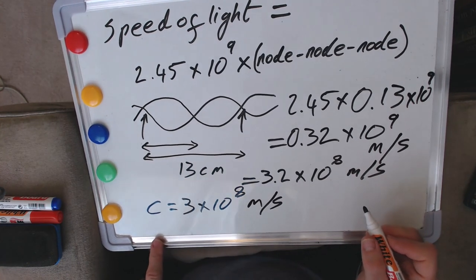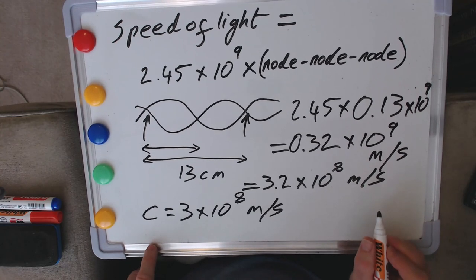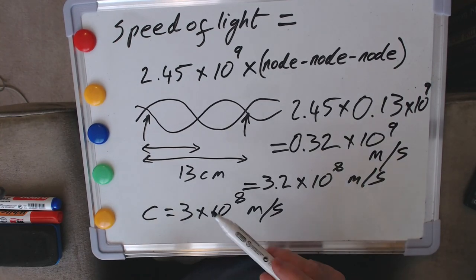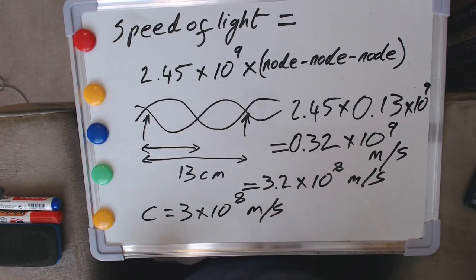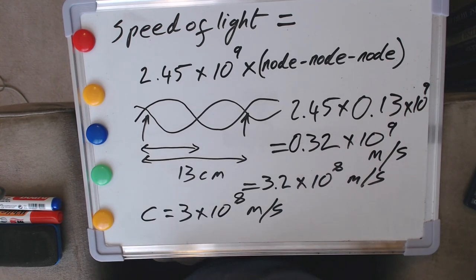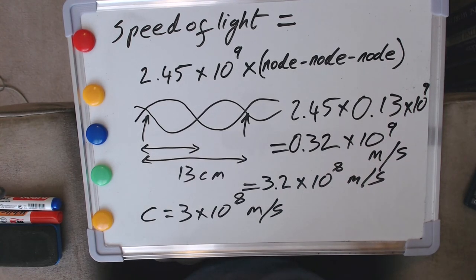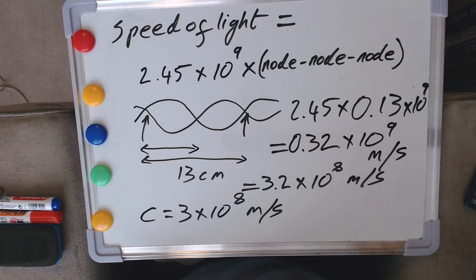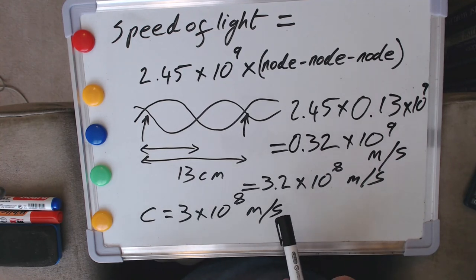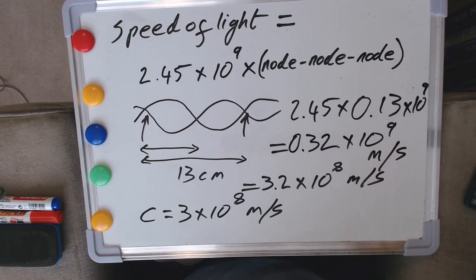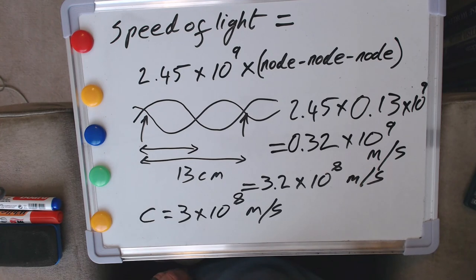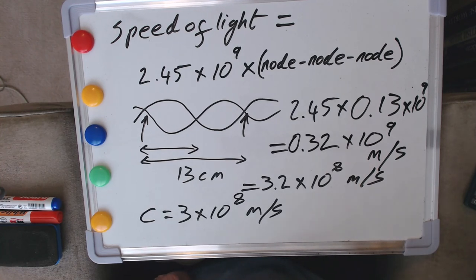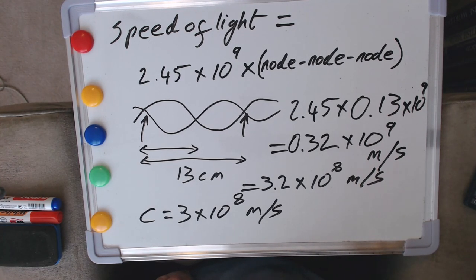So in our very crude experiment, and it is very crude, it's unfortunate that node to node distance is about the same as the diameter of the chocolate biscuits we were using, but in our crude experiment we've got a result for the speed of light that is within 10% of the textbook value, so that's okay I think. We deserve now a cup of tea or coffee and one of our warmed up chocolate biscuits. Goodbye.